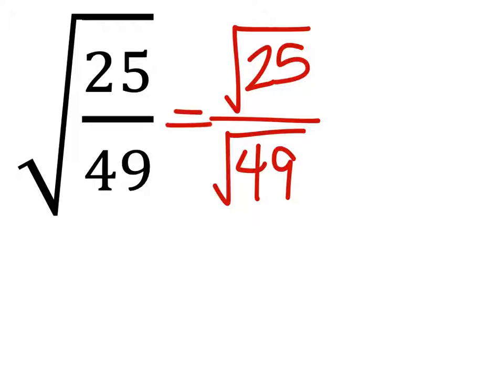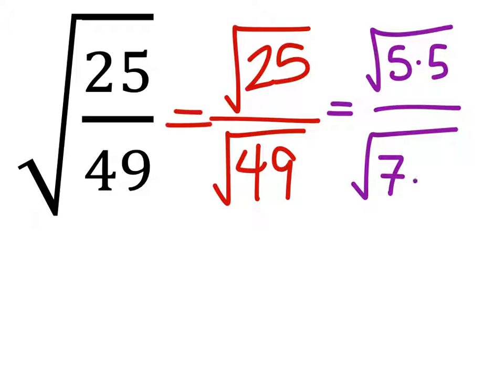And the square root of 25, well, that's the square root of 5 times 5. And the square root of 49 is the same as the square root of 7 times 7.